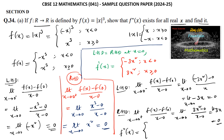Therefore, f''(x) exists and equals: -6x when x < 0, and 6x when x ≥ 0. The second-order differentiation exists for every real number.